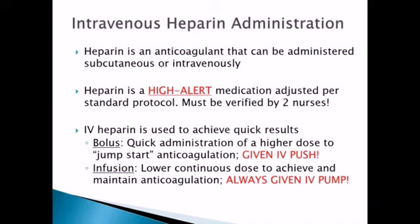Any adjustments need to be verified by two nurses, and typically your EHR system when you're documenting is going to require a co-signature. IV heparin is used to achieve quick results because we get it directly into the systemic circulation — it has a very short onset of action. We have a bolus, which is a quick administration of a higher dose to get things jump-started, given IV push. Then we have an infusion, which is a lower dose continuous infusion to achieve and maintain anticoagulation.